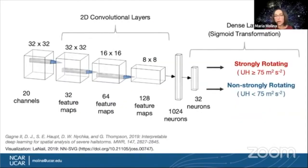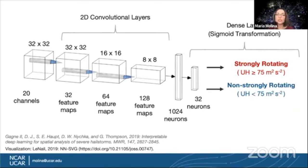Here is the architecture of our deep learning model. We applied three two-dimensional convolutional layers with an increasing number of activation maps that decrease in spatial extent due to max pooling. After that, we flatten our data and pass it through two dense layers. ReLU activation was used after each one of these layers, with the exception of the final dense layer, where we applied a sigmoid transformation to extract values between 0 and 1 as an estimate of the probability that a storm is strongly rotating or not. Values closer to 1 are considered strongly rotating, and values closer to 0 are non-strongly rotating.